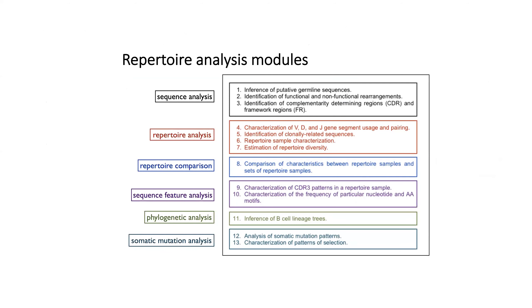Here's another view of the analysis capability that VDJ Server provides, broken up into different categories. There's analysis of the sequence itself, and then there's repertoire analysis — looking at sets of rearrangements and various statistics on those repertoires. Then you also want to compare those repertoires and their characteristics. And then other things like lineage tree calculation and somatic mutation analysis.